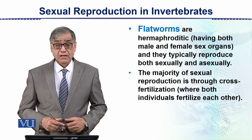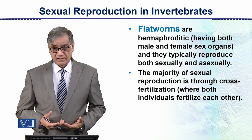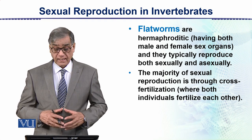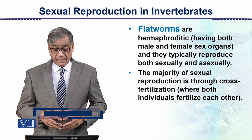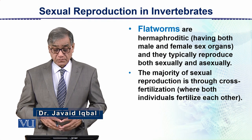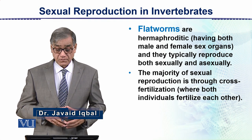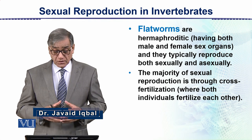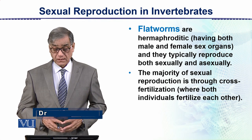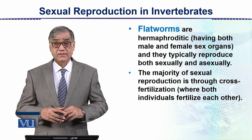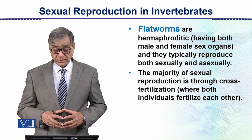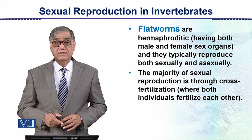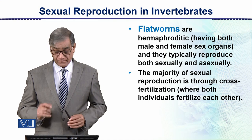In flatworms, they are hermaphrodites, having both male and female sexes, and they typically reproduce both sexually and asexually. The majority of sexual reproduction is through cross-fertilization, where both individuals fertilize each other. This is what occurs in flatworms.